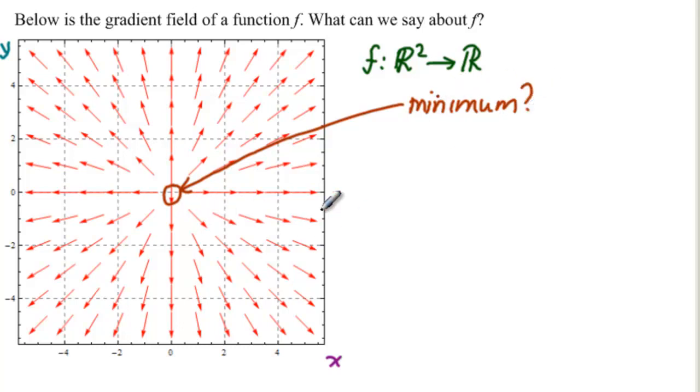And the third thing we can see is that all of the vectors are exactly the same length. All of the vectors have the same magnitude. So what does that mean? That means that growth is constant.